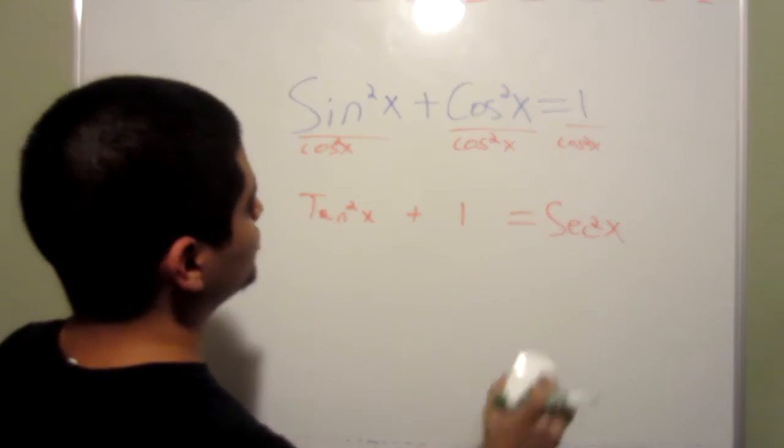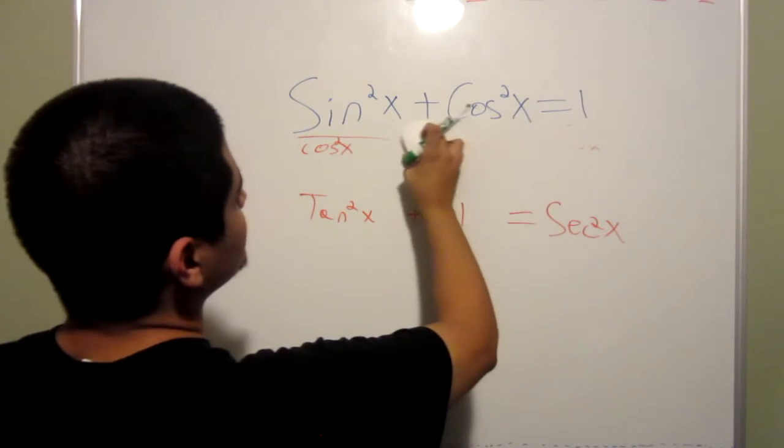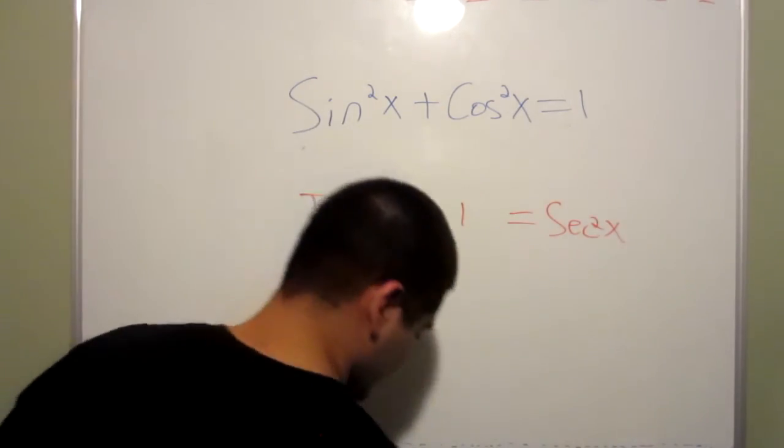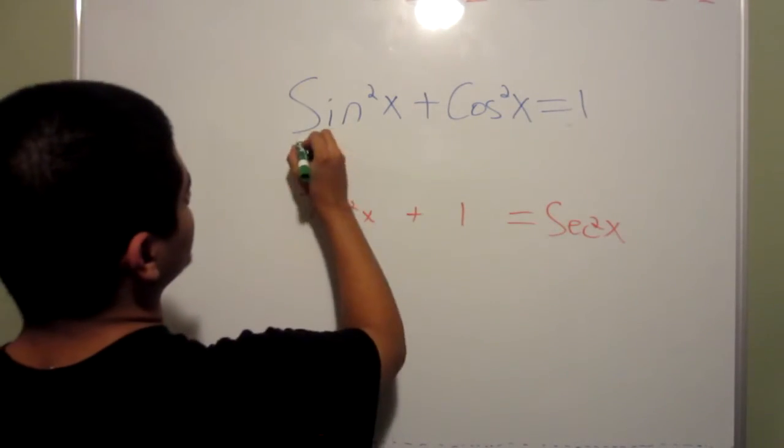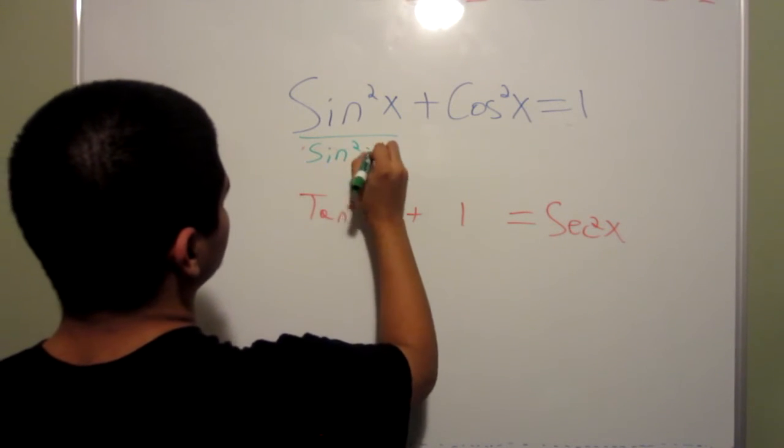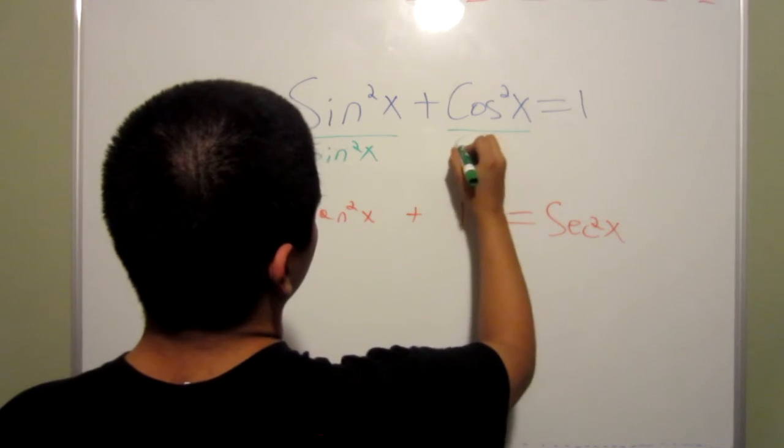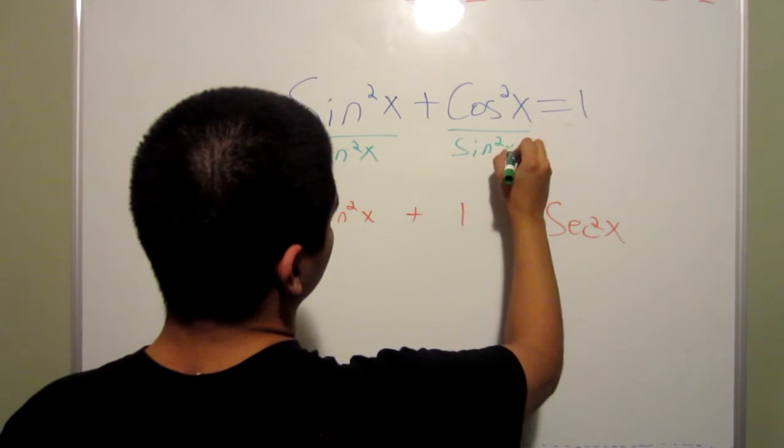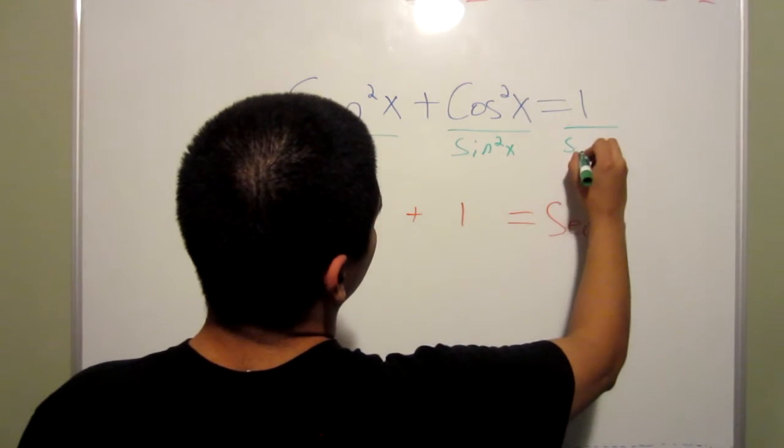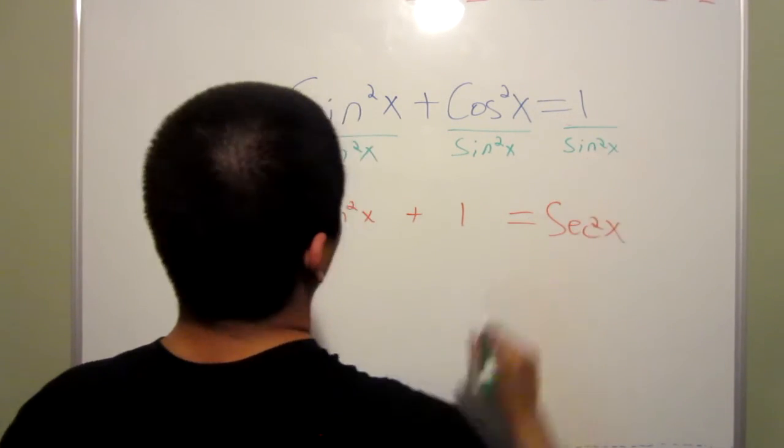And now, for the third one, you just divide by sine instead of cosine. So, divided by sine squared x, you would get, for this one, you would get 1.